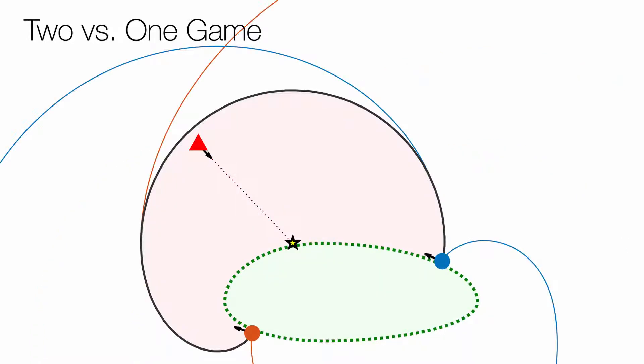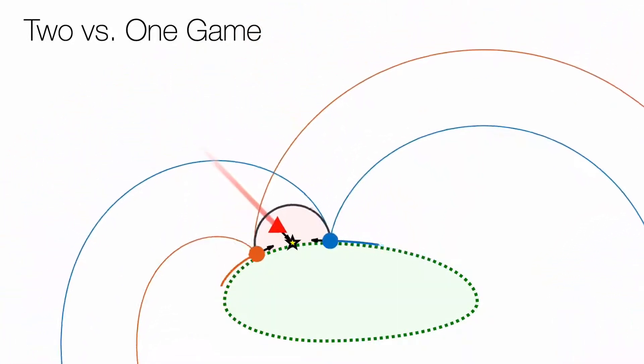For the intruder to win the game, it has to start in the shaded area, which we call the local game region.